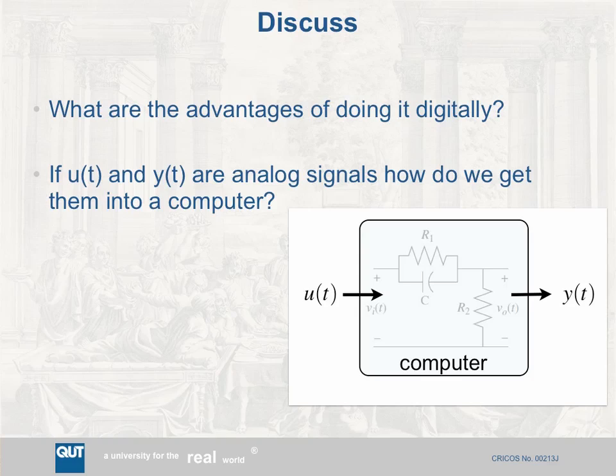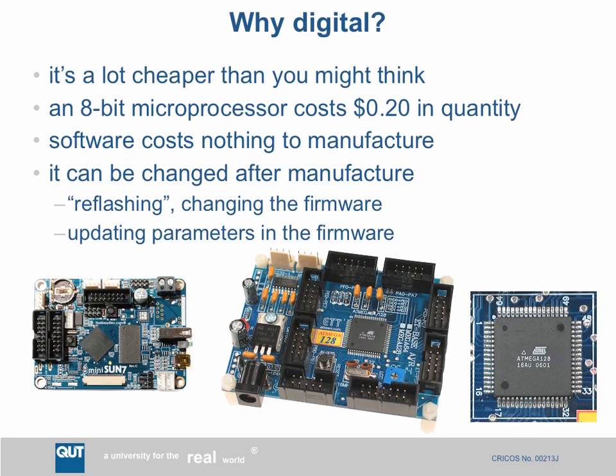Here are some points about the advantages of doing it digitally. It's actually a lot cheaper than you might think — an 8-bit microprocessor costs around 20 cents if you buy them in quantity, meaning tens of thousands of devices. Another really important aspect is that software costs nothing to manufacture — you simply copy it. It certainly costs a lot to develop and debug, but it doesn't cost anything to manufacture. And you can change software after manufacture — you can re-flash the microprocessor or update controller parameters stored in firmware.